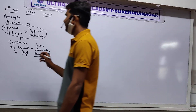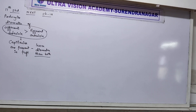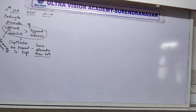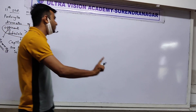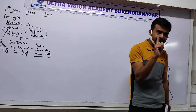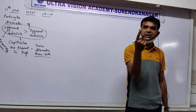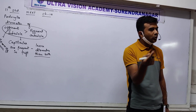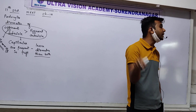The diameter of the afferent arteriole is more because it bears more pressure — 70 mmHg blood pressure, which is high. With the help of this high blood pressure, blood enters inside Bowman's capsule and filtration occurs. That is why it is known as pressure filtration, and the process occurring in Bowman's capsule is called glomerular filtration.